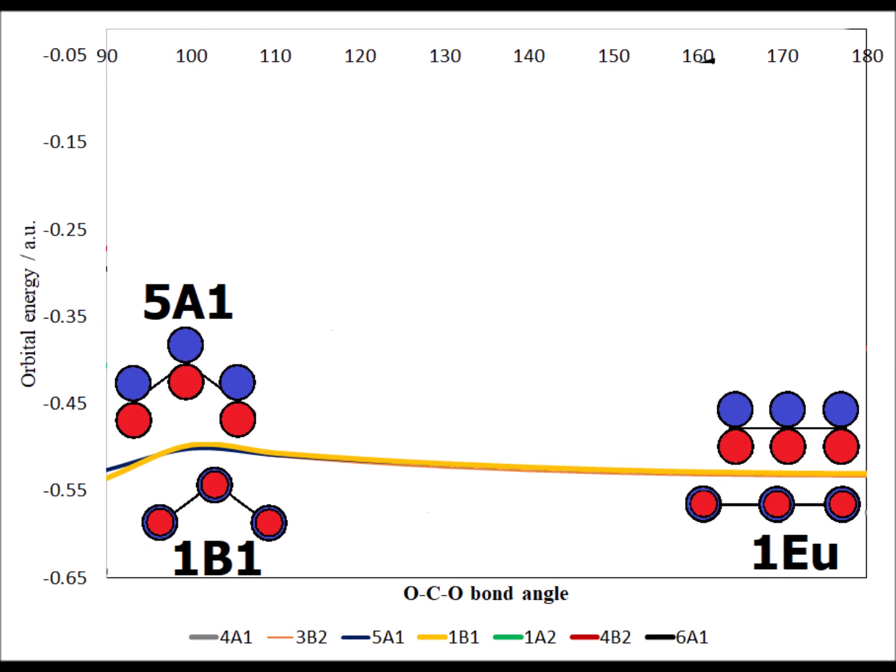5A1 and 1B1 begin with similar, though not identical, energies in the bent CO2. Following our scheme, 5A1 involves 2py orbitals on all three atoms, whereas 1B1 involves 2pz's. They converge to degenerate orbitals 1Eu.